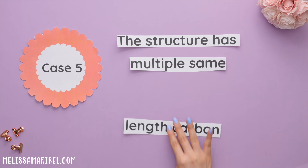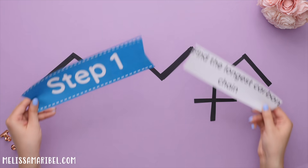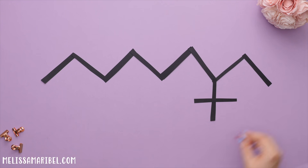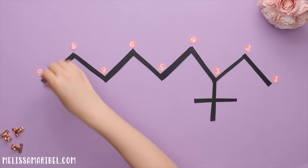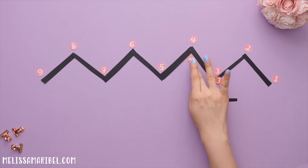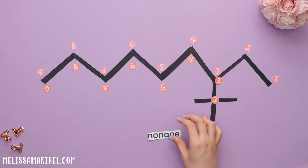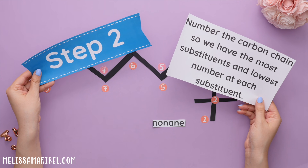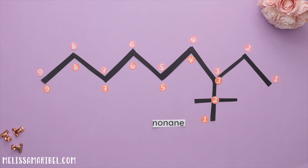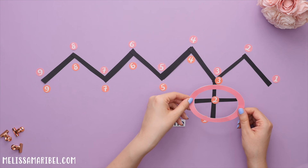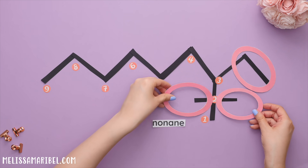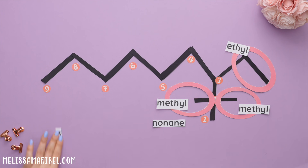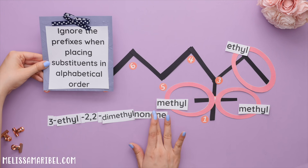Case five: the structure has multiple same-length carbon chains. Step one: the longest carbon chain has nine carbons — nonane. Step two: we want the numbering that gives us the most substituents. Way one gives only one substituent, which is a t-butyl group — it literally looks like a T. But way two gives three substituents: an ethyl group and two methyl groups located at the second carbon. So way two is correct, giving us the final name.